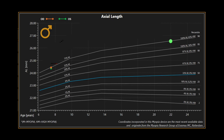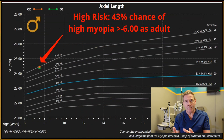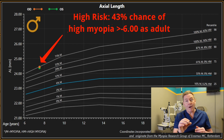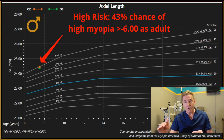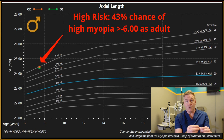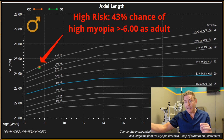Tracking axial length growth will tell you if it's putting them at higher risk for becoming more nearsighted. Your eye doctor can do that test and graph it against the normal growth curves for other children in their same age group, to tell you the risk of them becoming highly myopic as an adult. If you want to slow down the progression of myopia in your child, look for an eye doctor that can measure axial length and track that growth over time.